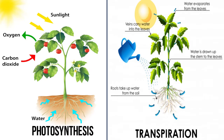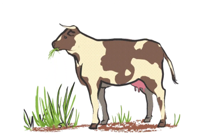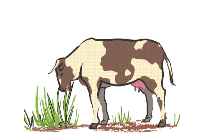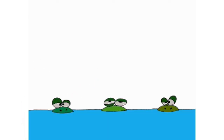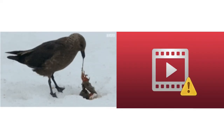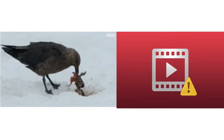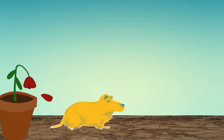Photosynthesis and transpiration processes occur in plants. Some creatures consume plants — they are called herbivores. Whereas some creatures consume other animals — they are called carnivores. Omnivores are those who eat both plants and animals. All plants and animals are biodegradable.